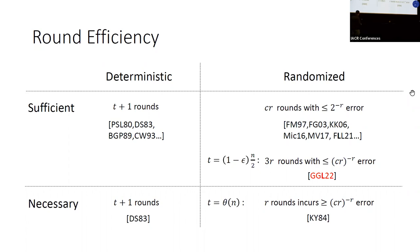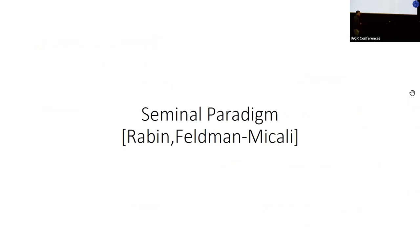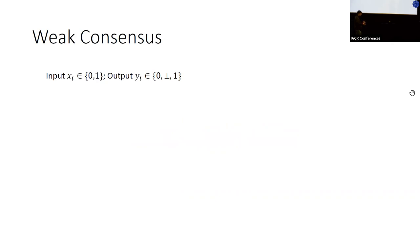Before we get into how we solve this, let me start with some background on one of the most prominent paradigms for designing BA protocols, initially introduced by Rabin and many others. In this seminal paradigm, the first thing we do is run a weak form of agreement called weak consensus, also known as crusader's agreement. The idea is: parties start with an input bit and we expand the domain to size three, where parties can output either a bit or bottom — where bottom captures situations in which parties don't know what to output.